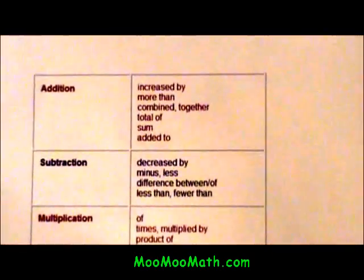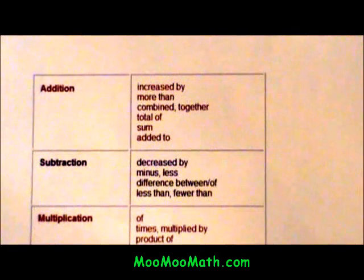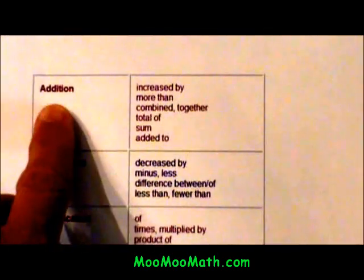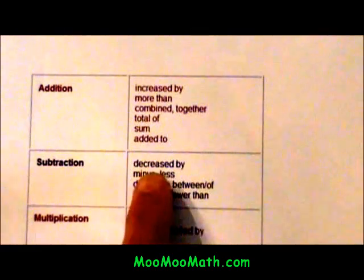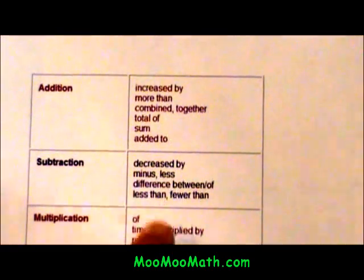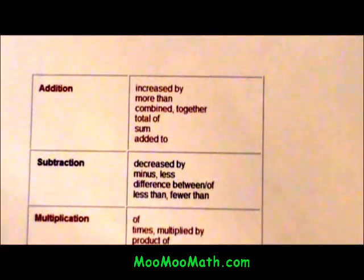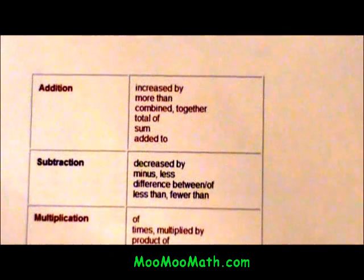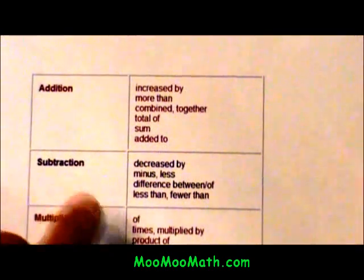I've got a list of them and these are also on our website. When you have the keywords increased by, more than, combined, together, total, sum, or added to, you're going to make that into an addition statement. If you have the keywords decreased by, minus, less, difference of or between, less than, fewer than, you're going to use subtraction.